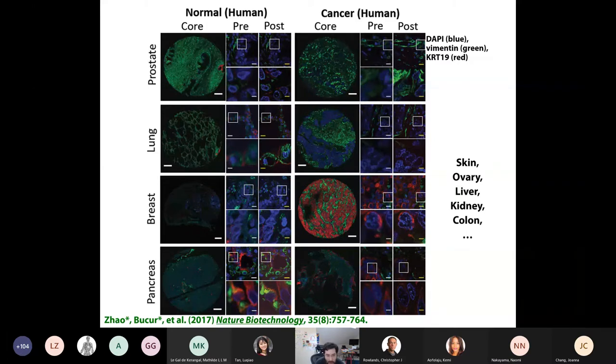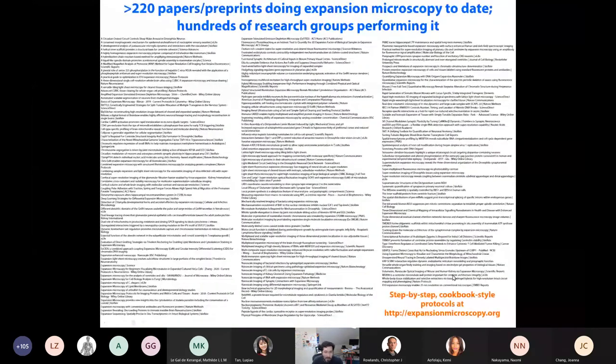So let me summarize this first part of the talk. We've discovered that we can physically expand biological specimens. That makes many microscopes, ordinary microscopes, into nano imaging devices. We can apply this to visualize lots of different things, including proteins, nucleic acids, and we have ongoing work to visualize other molecule types as well. You can apply it to a wide variety of different species, including human specimens, and a wide variety of different tissue types.